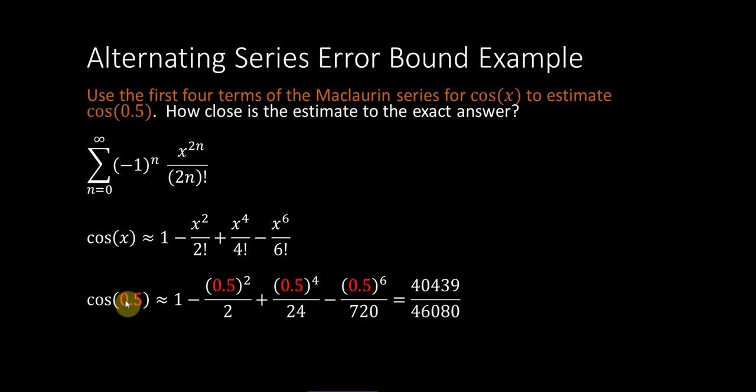And I simply substitute in 1 half or 0.5, and then I work out all of the details. 2 factorial is 2, 4 factorial is 24, 6 factorial is 720, and I get this big fraction, 40,439 over 46,080. And that as a decimal is this decimal with some repeating 7s at the end.